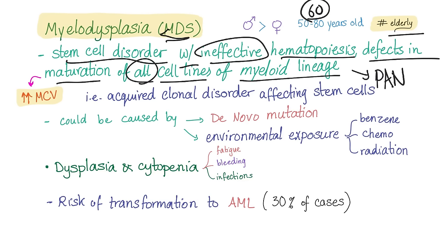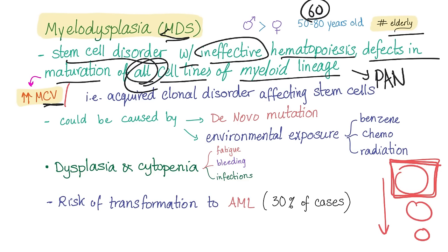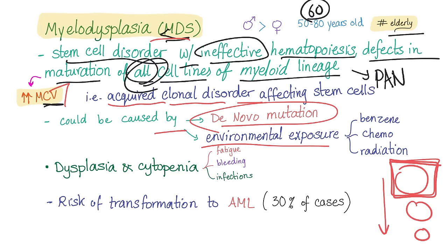MCV will be high. When cells mature, they decrease in size. When you have problems in maturation, you are stuck with big cells, so MCV will be high. MDS is an acquired clonal disorder. It could be caused by de novo mutation or environmental exposure, such as benzene, chemotherapy, or radiation.